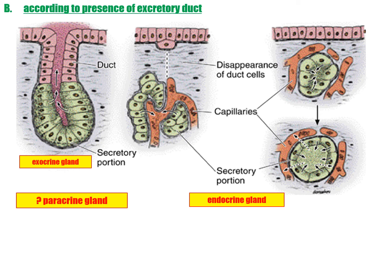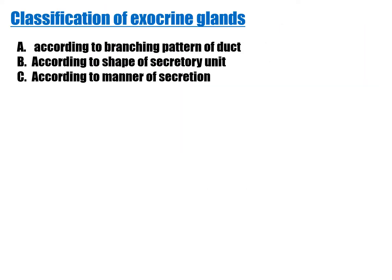The second classification is according to the presence of an excretory duct: exocrine gland, endocrine gland, and paracrine (pancreatic) gland. If a duct is present, it is an exocrine gland; if the duct disappears, it is an endocrine gland. Now, classification of exocrine glands according to the branching pattern of the duct.